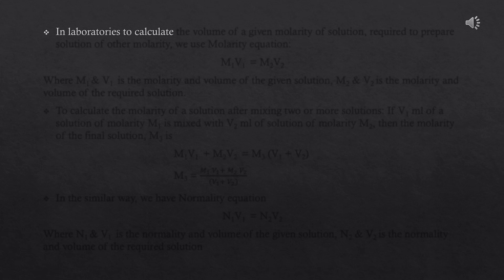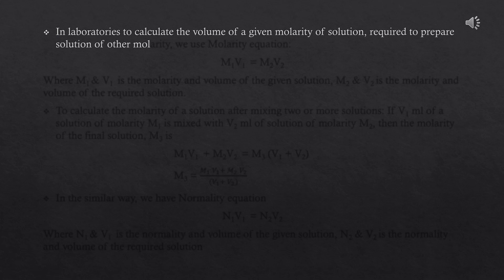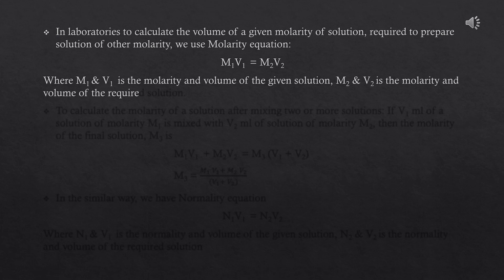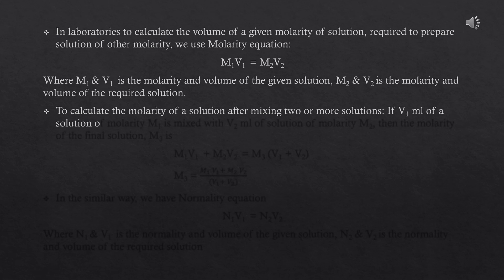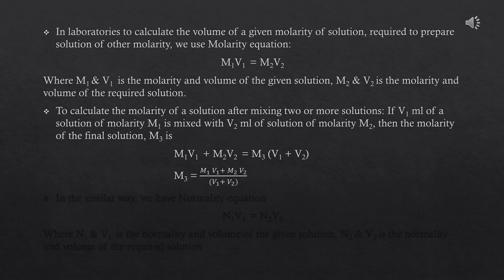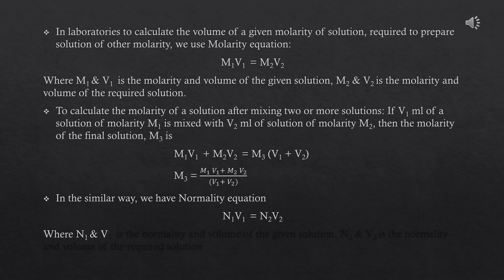In laboratories, to calculate the volume of a given molarity solution required to prepare another molarity, we use the molarity equation: M₁V₁ = M₂V₂, where M₁ and V₁ are the molarity and volume of the given solution, and M₂ and V₂ are for the required solution. To find molarity after mixing two solutions: M₁V₁ + M₂V₂ = M₃(V₁ + V₂). Similarly, for normality: N₁V₁ = N₂V₂.